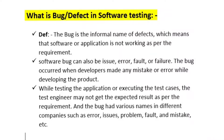The bug is the informal name of defect, which means the software or application is not working as per the requirement. A software bug can also be called an issue, error, fault, or failure.